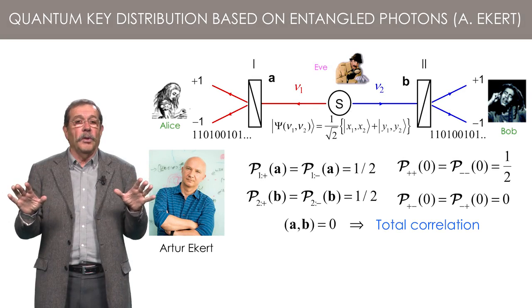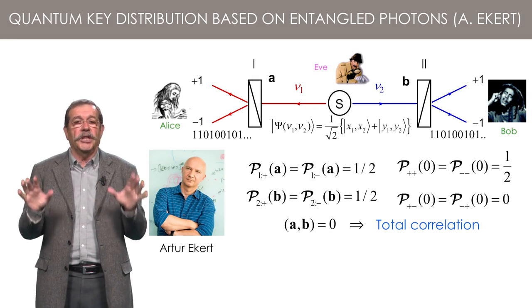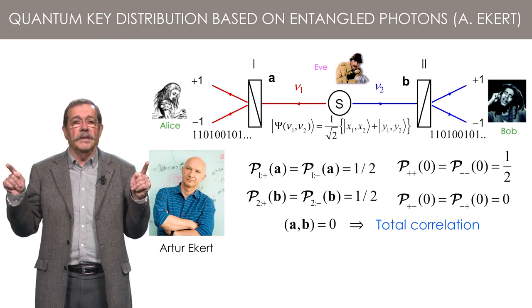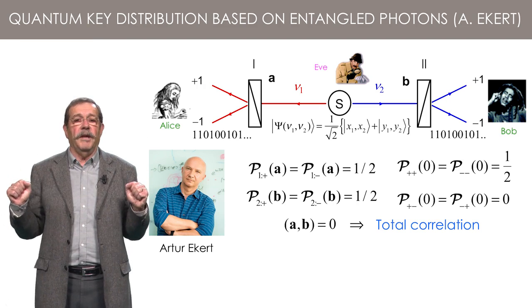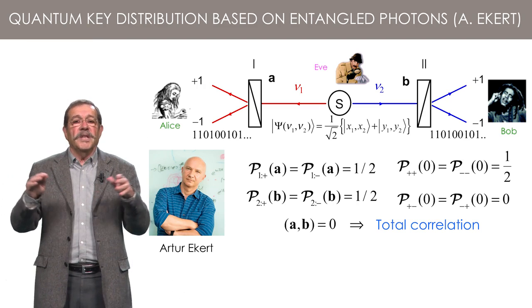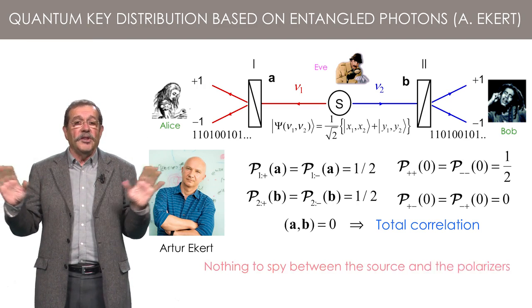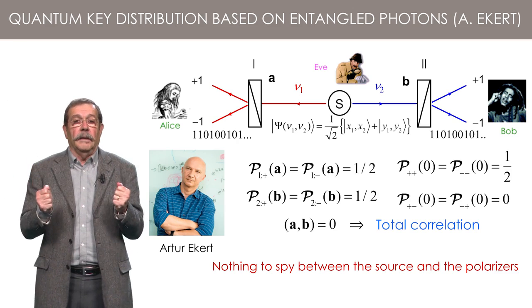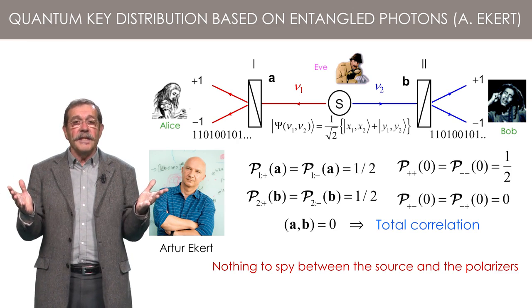According to the image built from the projection postulate, the value of each bit of the key is decided only at the last moment, when the measurements are performed on the photons. So, between the source and the polarizers, the key does not exist yet. There is nothing to spy. Fascinating, isn't it?